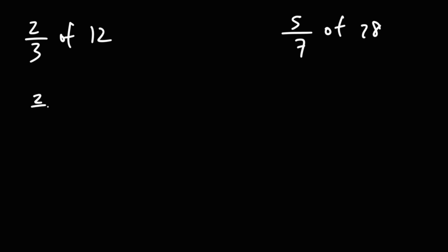So 2 thirds of 12 we can write that as 2 over 3 times 12 over 1. And 12 we can break that into 4 times 3. Notice that we can cancel the 3 and we're left with 2 times 4 which is 8.